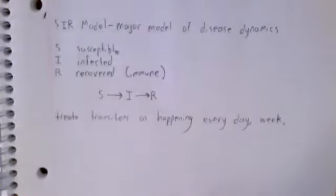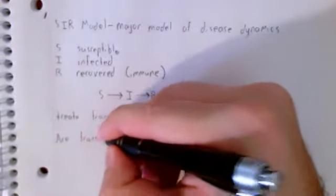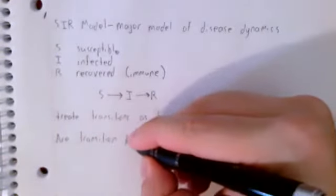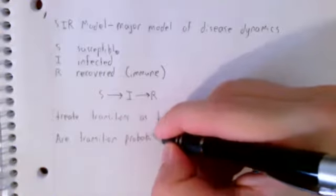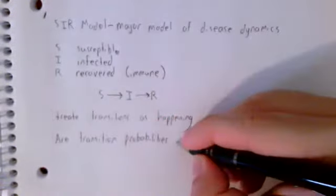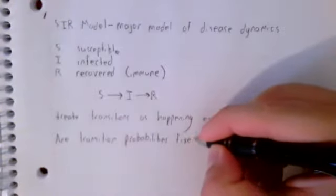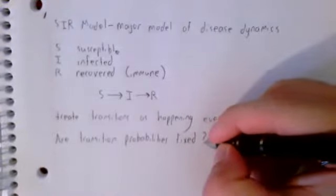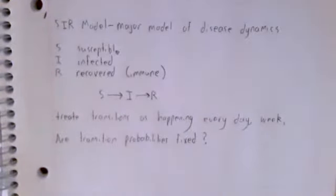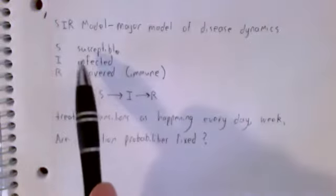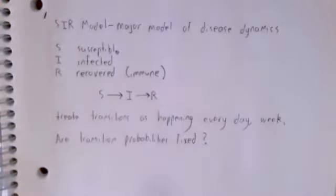A somewhat more serious issue is: are our transition probabilities fixed? And the answer to this has to be no, at least not usually.